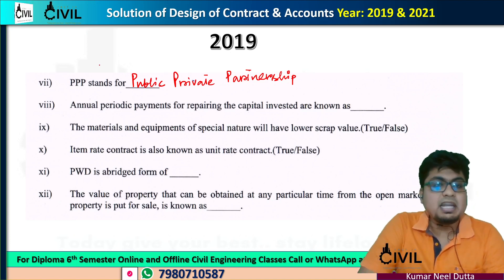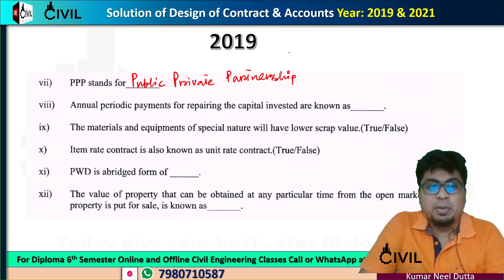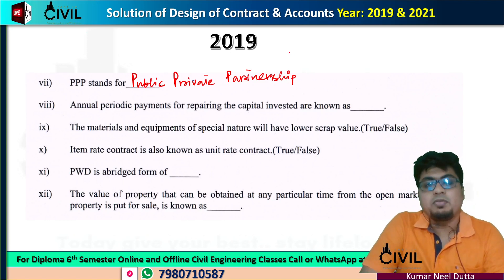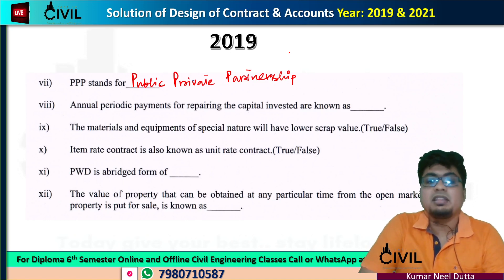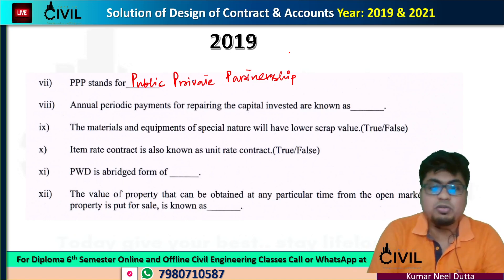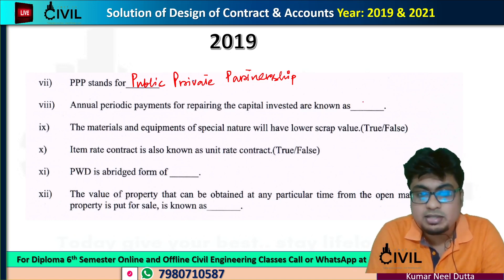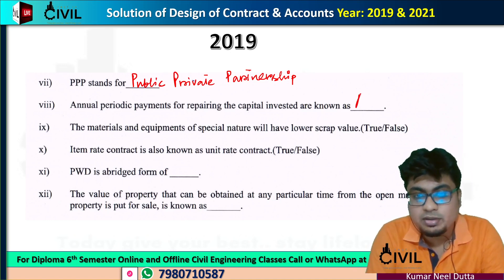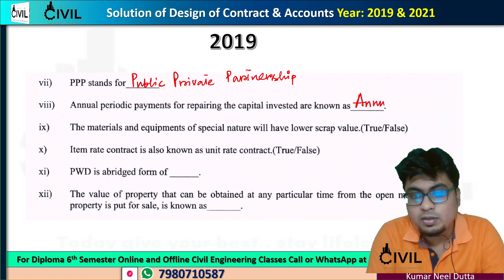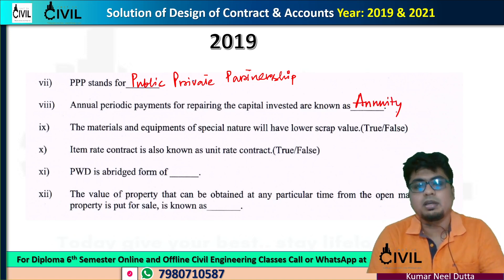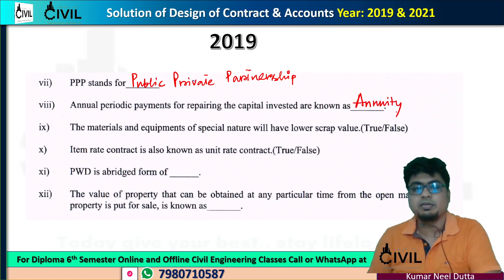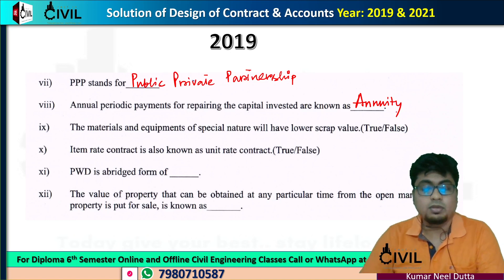Number 8: what is the annual periodic payment for repairing the capital investment? This is known as annuity. Okay. Annuity.